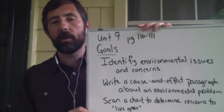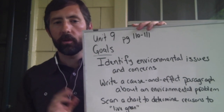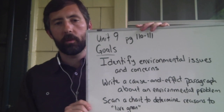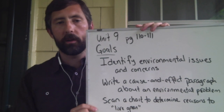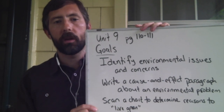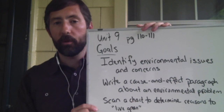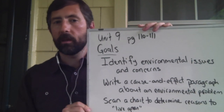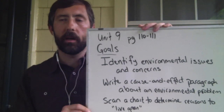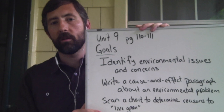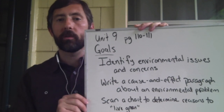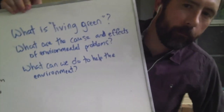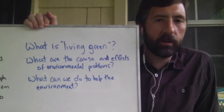We'll be talking more about environmental problems throughout the unit, so if you don't have ideas about that right now, don't worry — we will make sure you get there. Our final unit goal is to scan a chart to determine reasons to live green. It might not be something you think about very often, but in this unit, maybe you will find new reasons to live green. Here are some questions we can start to talk about.